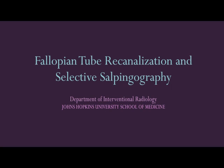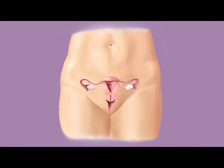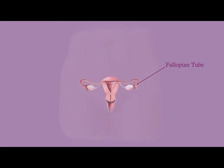Fallopian tube re-canalization and selective salpingography. The most common cause of infertility in women is a blockage or narrowing of one or both fallopian tubes.